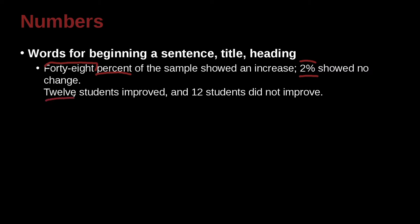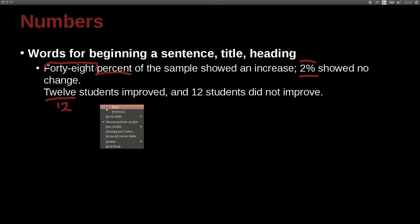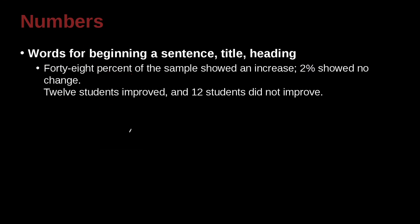Here's another example. 12 students improved, and 12 students did not improve. Here the word 12 is bigger than 10. So maybe we should write the number 12. But no, because it's the beginning of a sentence, we do not do that. We have to spell it out.